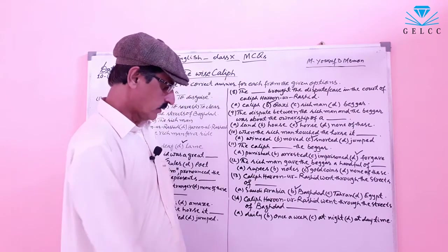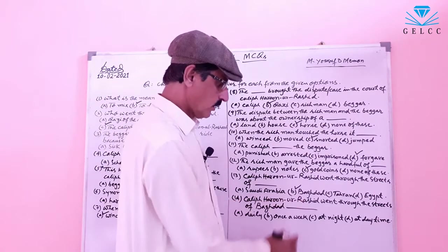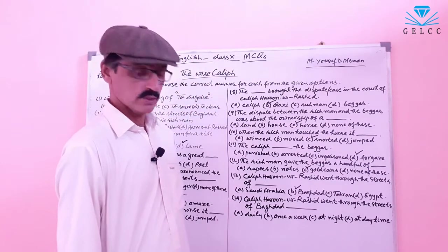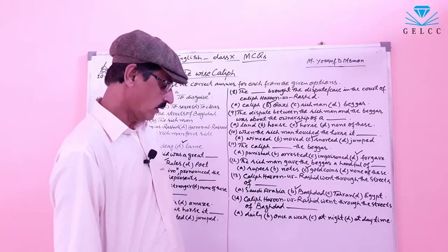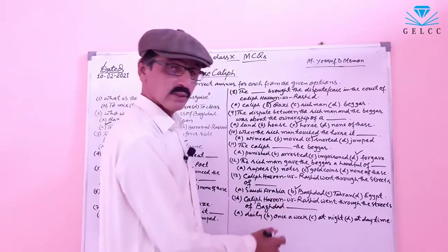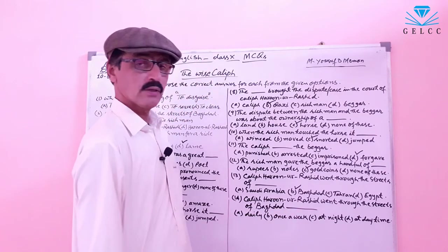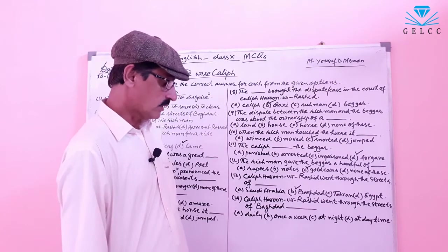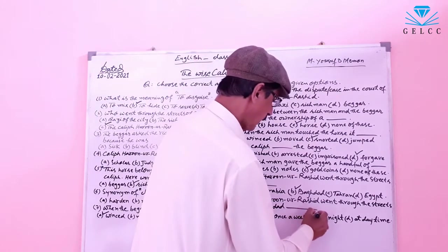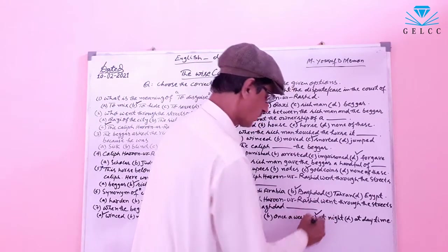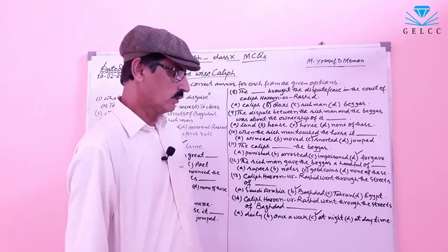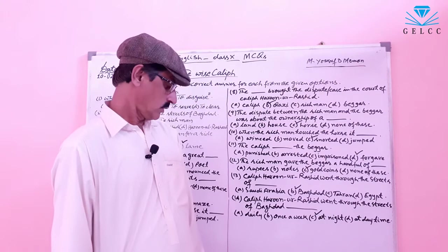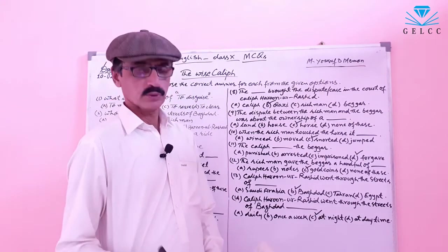Number 14: Caliph Harun Rashid went through the streets of Baghdad at what time? Options: A: Daily. B: Once a week. C: At night. D: At daytime. The correct answer is option C — at night. The Caliph Harun Rashid went through the streets of Baghdad at night. These were the 14 MCQs on the lesson 'The Wise Caliph.'